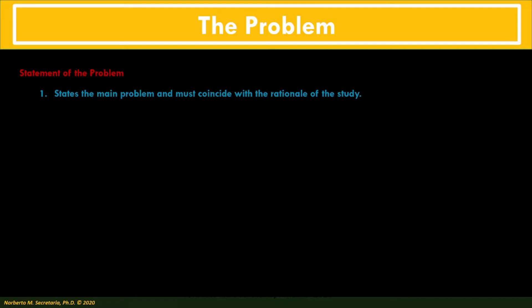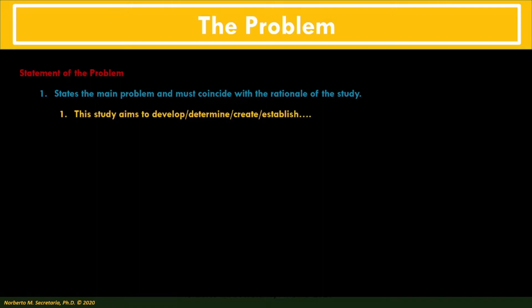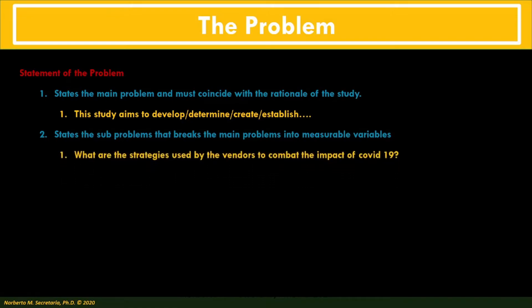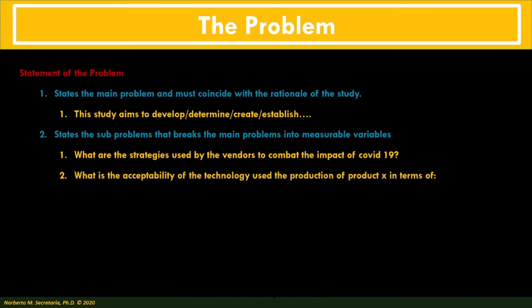The statement of the problem states the main problem and must coincide with the rationale of the study. For example, we say 'This study aims to determine' or 'This study aims to develop, create, establish,' and so on. The statement of the problem also states sub-problems that break the main problem into measurable variables. For example: 'What are the strategies used by vendors to combat the impact of COVID-19?' — that is an example of a sub-problem. We measure the frequency of these strategies, making it a measurable variable.